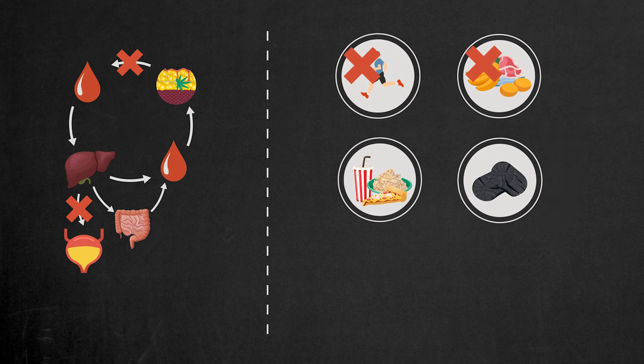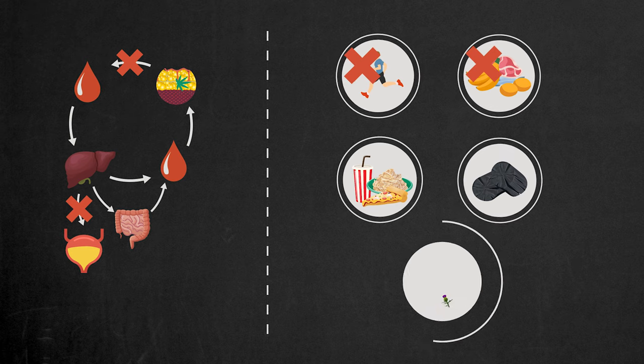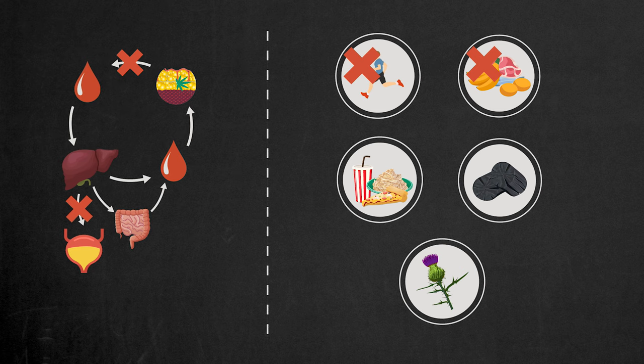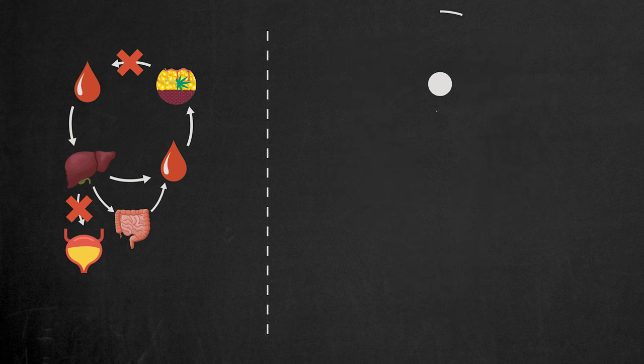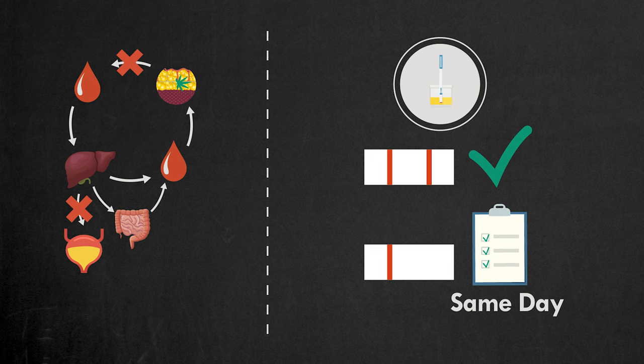Continue taking activated charcoal 30 minutes before each meal. Take milk thistle. It will slow the metabolism of THC in the liver, and less THC will end up in your urine. Test yourself on the morning of the drug test. If you are still testing positive, follow the same-day detox instructions to flush the remaining THC out of your system.